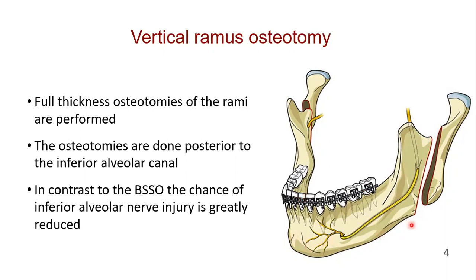The osteotomies are done posterior to the inferior alveolar canal. In contrast to the BSSO, the chance of inferior alveolar nerve injury is greatly reduced.